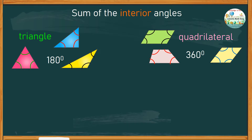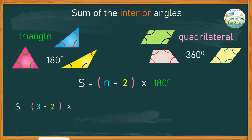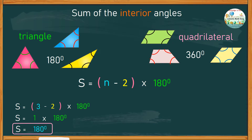Let's check if we can get the same numbers using the formula S equals N minus 2 times 180. Starting with the triangle: S equals the number of sides, which is 3, minus 2, then multiplied by 180 degrees. So S equals 3 minus 2, leaving 1, multiplied by 180 degrees. Since any number multiplied by 1 gives the same number, the sum of the interior angles of any triangle is 180 degrees, as expected.